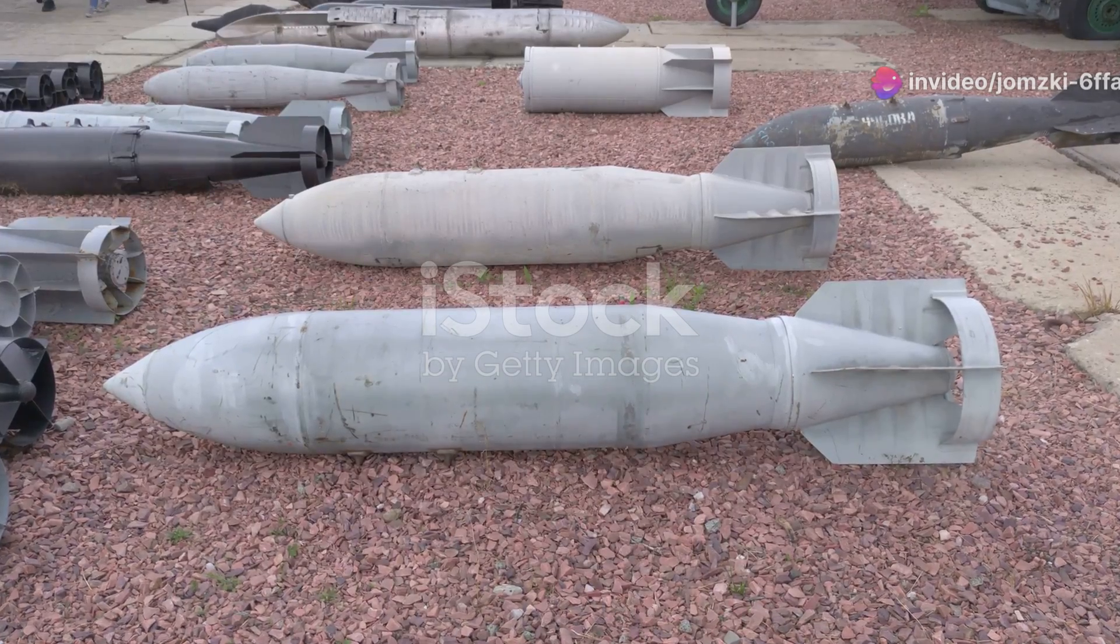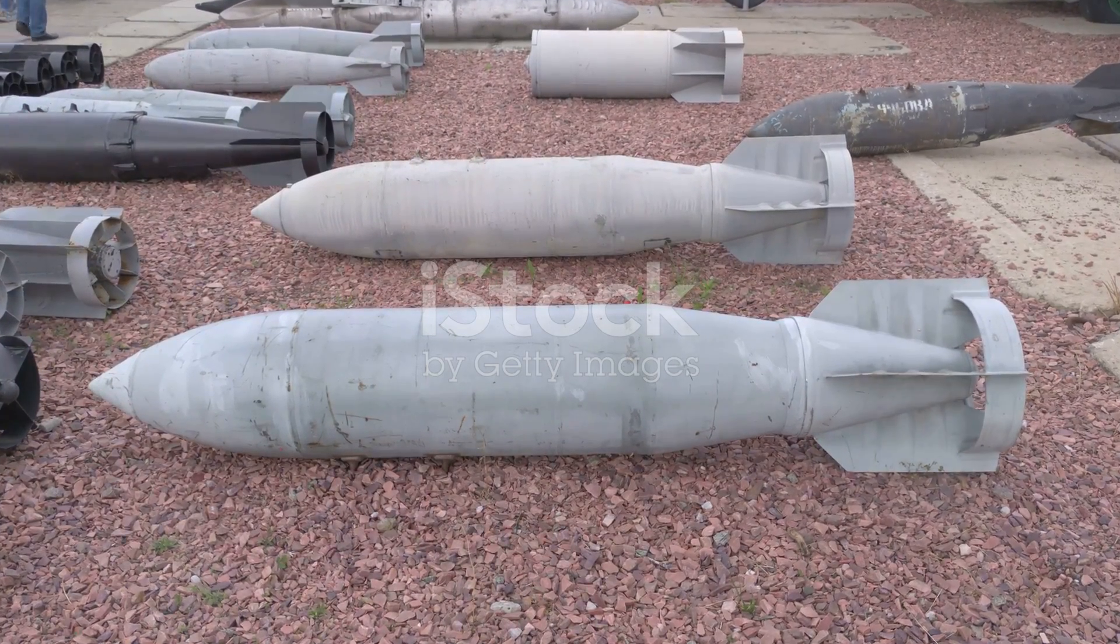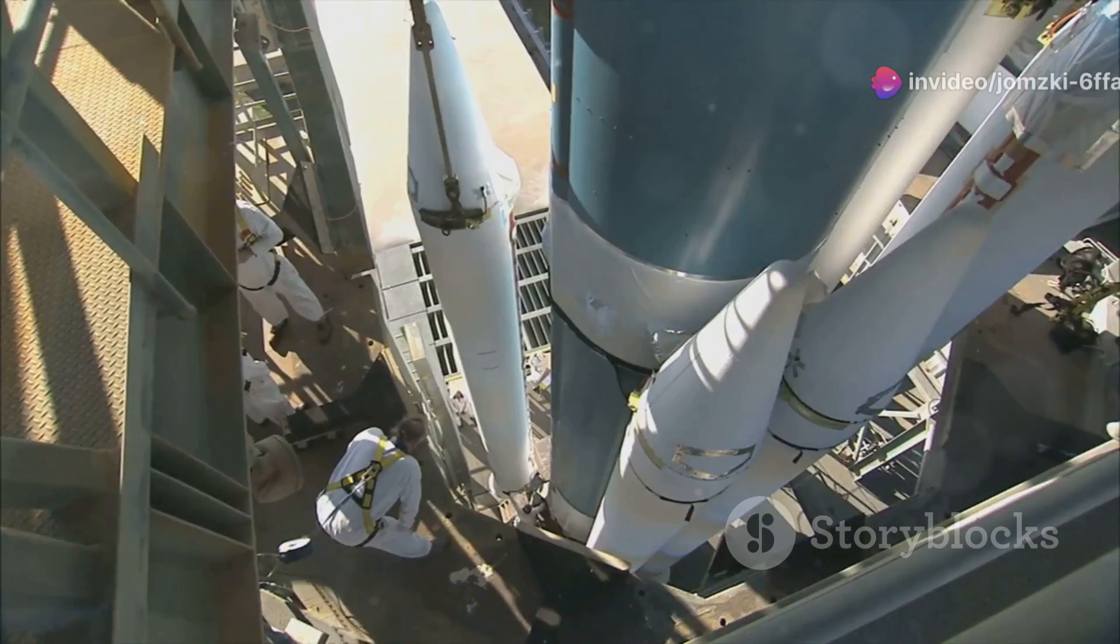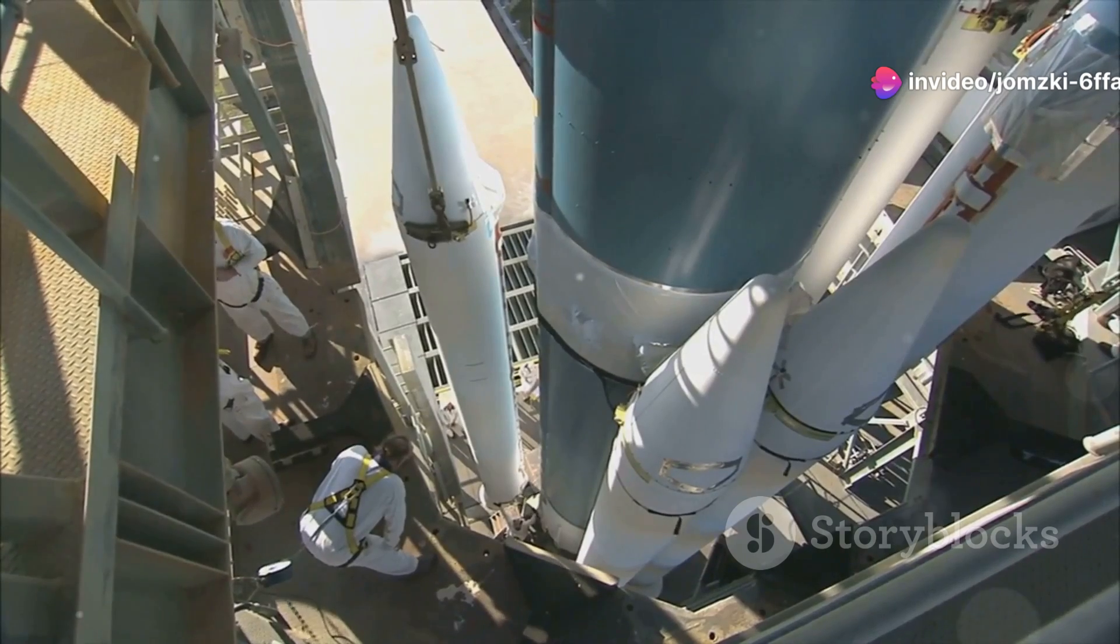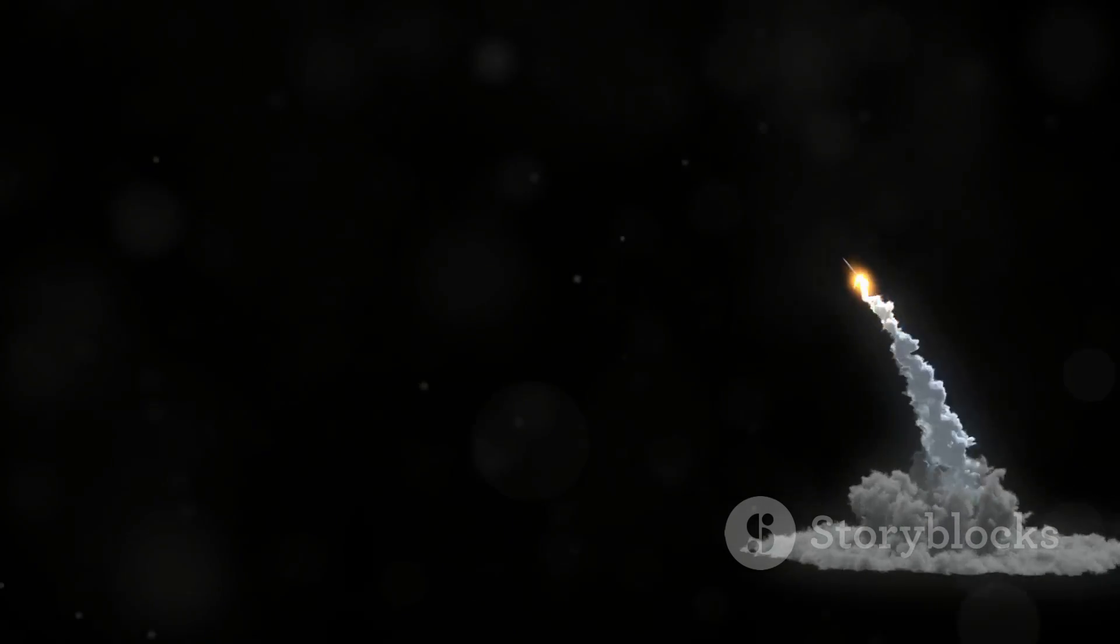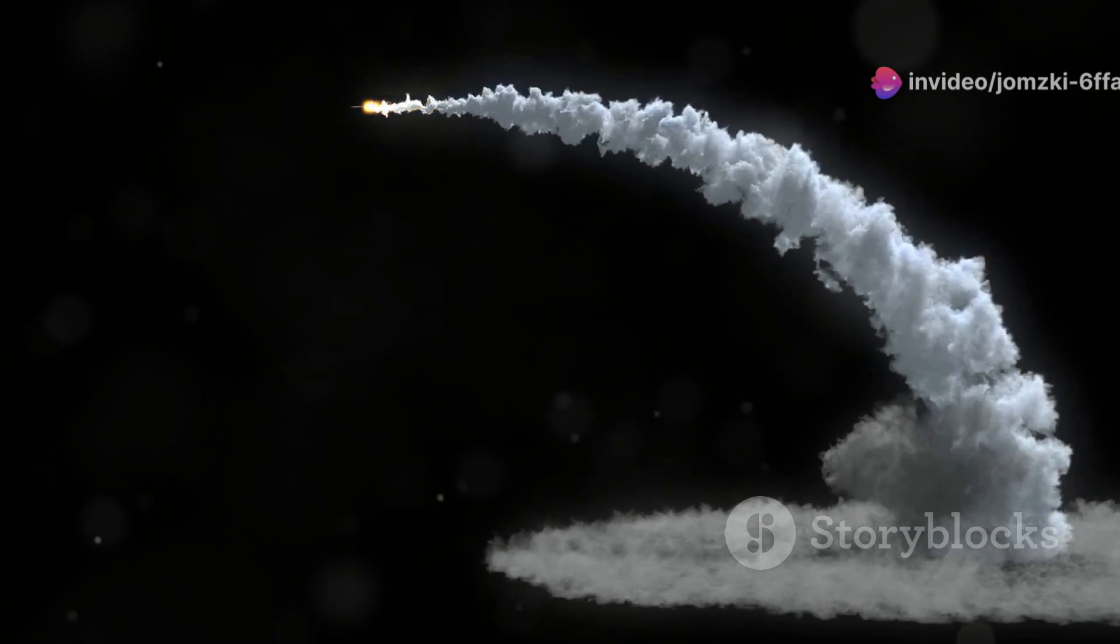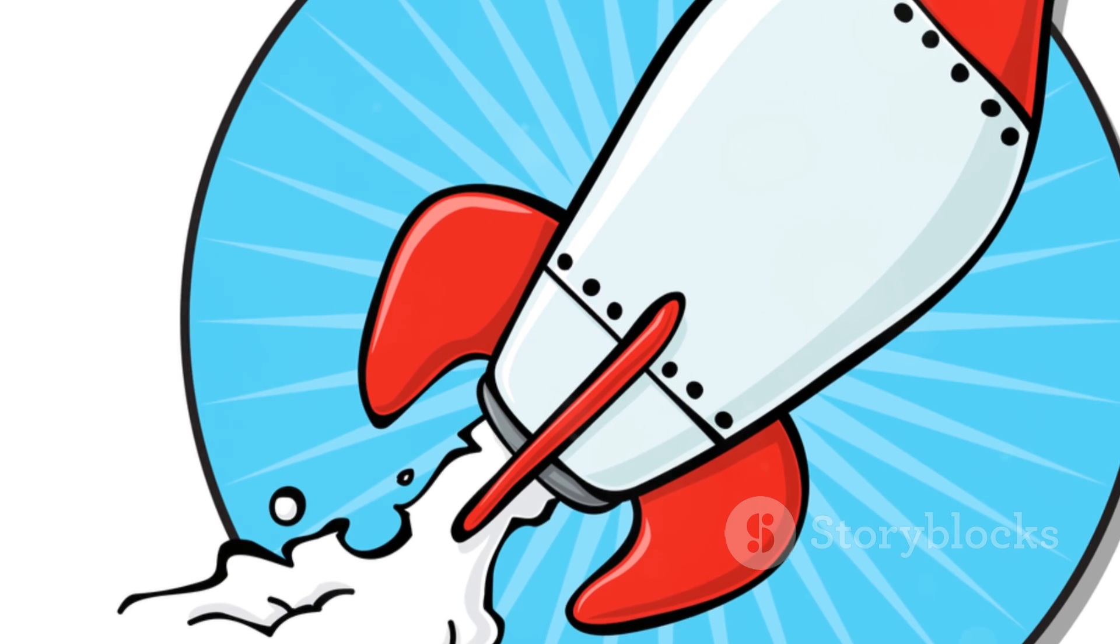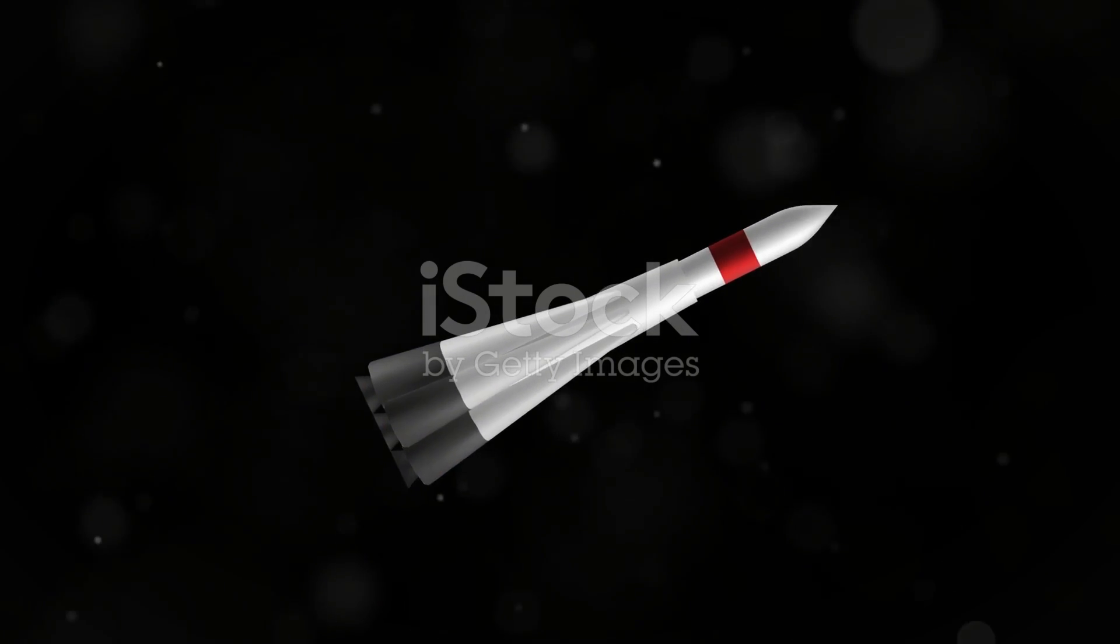SAMS utilize a variety of propulsion systems, each with its own advantages and disadvantages. Solid propellant rockets are commonly used, as they are relatively simple, reliable, and offer high thrust-to-weight ratios. These rockets work by burning a solid mixture of fuel and oxidizer, generating hot gas that is expelled through a nozzle, propelling the missile forward. However, once ignited, solid propellant rockets burn continuously until all the fuel is consumed, limiting the missile's range and maneuverability.